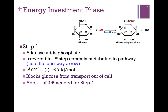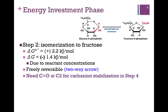Step 2 is the isomerization of glucose-6-phosphate to form fructose-6-phosphate. All we've done is change the anomeric carbon — the portion of the molecule that's changing is highlighted in red. In glucose, the anomeric carbon is carbon number one; we convert that to fructose, so our anomeric carbon is now carbon number two. The standard delta G is slightly unfavorable, but made slightly favorable inside the cell due to reactant concentrations. It is a near-equilibrium, freely reversible reaction, indicated by the two-way arrow. We'll see in Step 4 that we need a carbonyl at position two in order to break the bonds between carbons three and four.